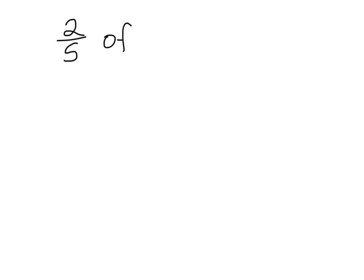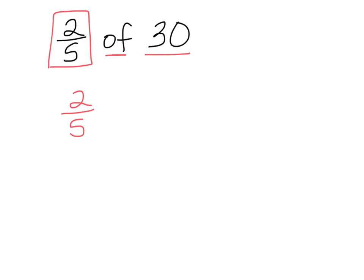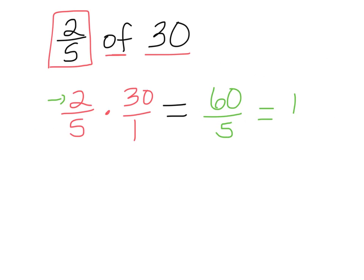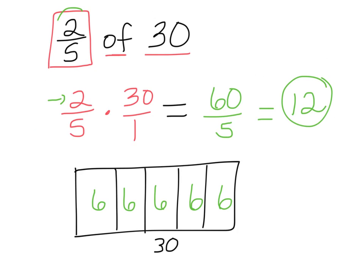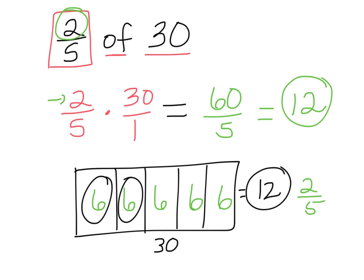Why don't you try this one? Find 2 fifths of 30. Push pause and push play when you're ready. The answer: 2 fifths of 30 uses the keyword 'of,' which tells you to multiply. So 2 fifths times 30 over 1 — multiply straight across: 2 times 30 is 60, and 5 times 1 is 5. Then 60 divided by 5 is 12. You could also draw a rectangle representing 30, split it into 5 parts — 30 divided by 5 is 6 per part. Take 2 of those parts: 6 and 6 gives 12. Either way, the answer is 12.